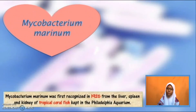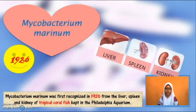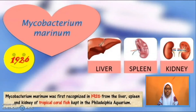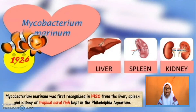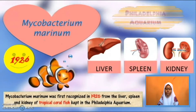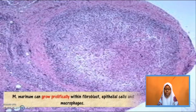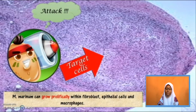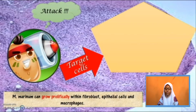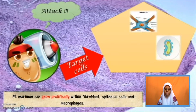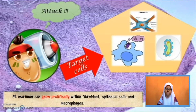Mycobacterium marinum was first recognized in 1926 from the liver, spleen and kidney of tropical coral fish kept in Philadelphia Aquarium. Mycobacterium marinum can also grow prolifically within fibroblasts, epithelial cells and macrophages.